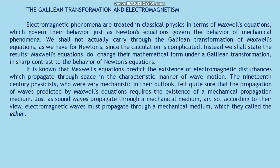The 19th century physicists, who were very mechanical in their outlook, felt sure that the propagation of waves predicted by Maxwell's equations requires the existence of a mechanical propagation medium — just as sound waves propagate through a mechanical medium. So according to their view, electromagnetic waves must propagate through a mechanical medium which they called the ether. The propagation medium was required to have quite strange properties in order not to disagree with certain known facts. For instance, it would have to be massless since electromagnetic waves such as light can travel through a vacuum, but it would have to have elastic properties to be able to transmit vibrations in the wave motion.